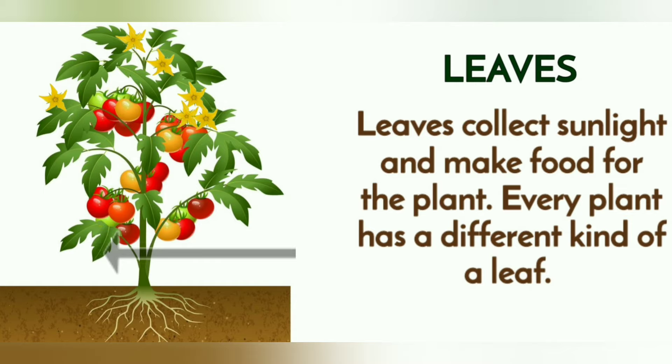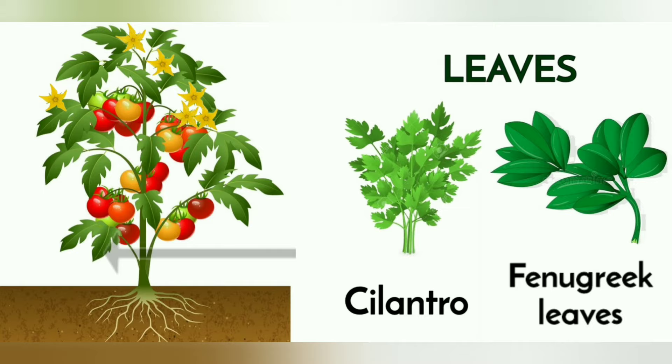Leaves collect sunlight and make food for the plant. Every plant has a different kind of leaf. Some examples of leaf we eat are cilantro and fenugreek leaves.